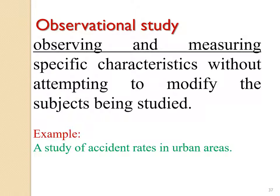An observational study involves observing and measuring specific characteristics without attempting to modify the subjects being studied. For example, a study of accident rates in urban areas — you collect data by observing and counting how many accidents occur in a given time period in a particular urban area. This type of study is called an observational study.